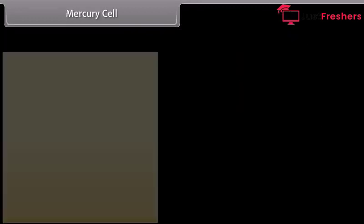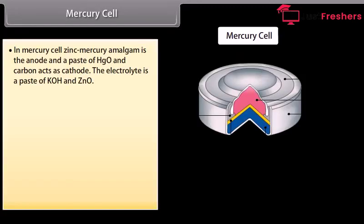Mercury cell. In mercury cell, zinc mercury amalgam is the anode and a paste of HgO and carbon acts as cathode. The electrolyte is a paste of KOH and ZnO. They produce constant voltage of 1.35 volt during their discharge.